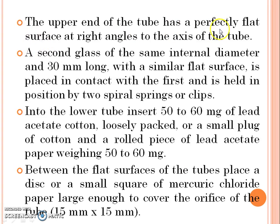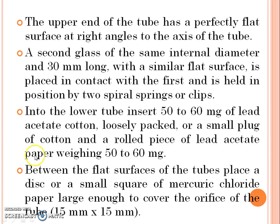The upper end of the tube has a perfectly flat surface at right angles to the axis of the tube. A second glass tube of the same internal diameter and 30 mm long with a similar flat surface is placed in contact with the first and held in position by two spring clips. Into the lower tube, insert 50 to 60 mg of lead acetate cotton loosely packed, or a small plug of cotton and a rolled piece of lead acetate paper weighing 50 to 60 mg. Between the flat surfaces of the tube, place a disc or small square of mercury chloride paper large enough to cover the orifice of the tube.